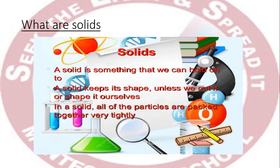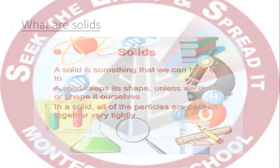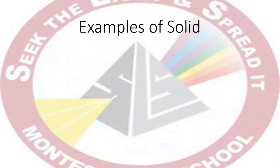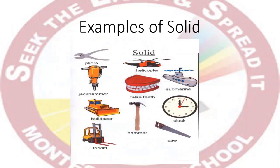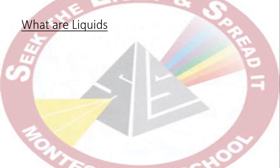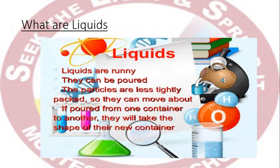A solid will change its shape only if force is applied — for instance, if it is broken or shaped. Here are some examples of solids: helicopter, false teeth, submarine, hammer, saw, clock, etc.